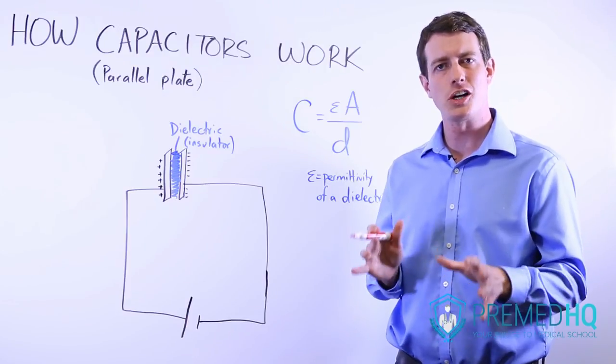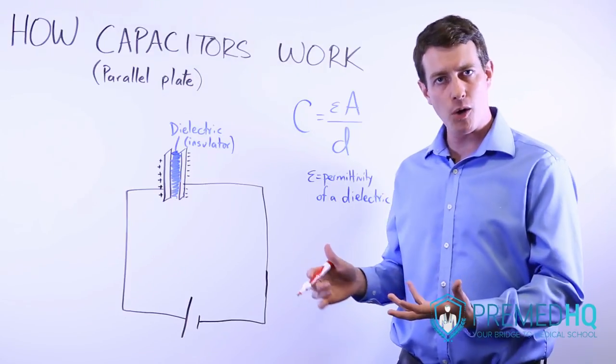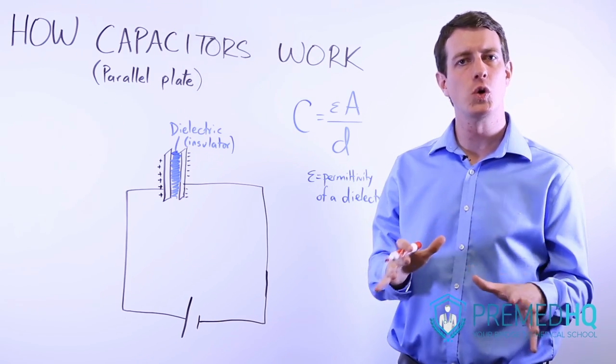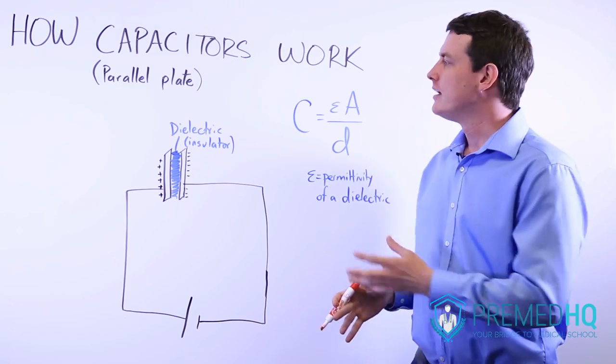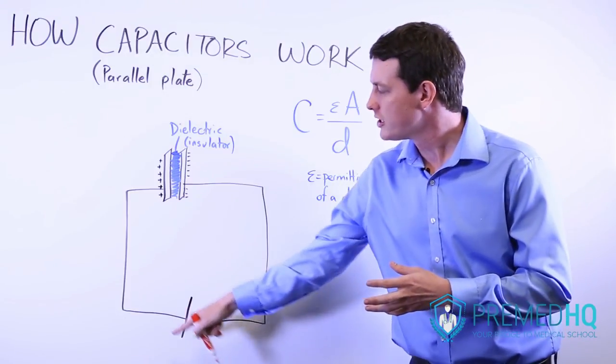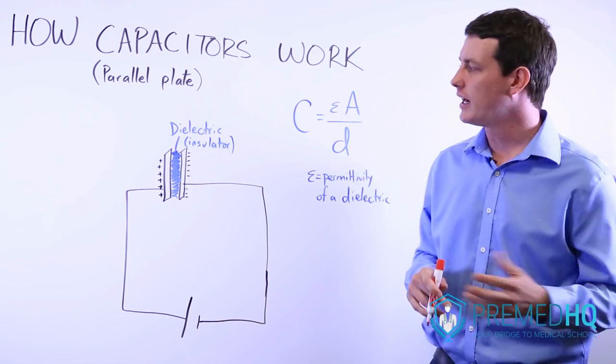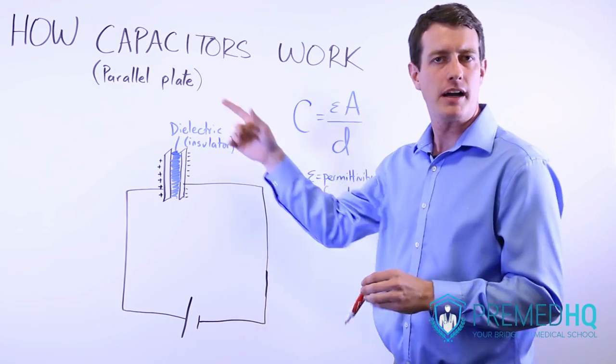Unlike resistors whose job is to dissipate power from a moving current, capacitors exist to store electrical energy in a circuit where voltage has been applied. The one you'll be responsible for understanding on the MCAT is the parallel plate capacitor.